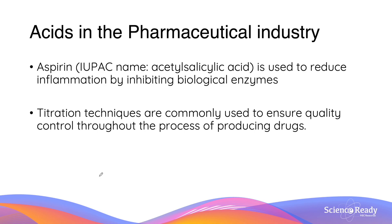In the pharmaceutical industry, we use acids for aspirin. Aspirin is used to reduce inflammation by inhibiting biological enzymes. Its IUPAC name is acetylsalicylic acid. Titration techniques are also often used to ensure the quality control of producing drugs, similar to checking quality control on food.